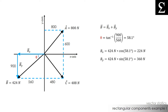We know that BX is acting in the negative X direction and BY is acting in the negative Y direction. So when we write force B with its respective rectangular components, we write force B is equal to negative 224 newtons i minus 360 newtons j.